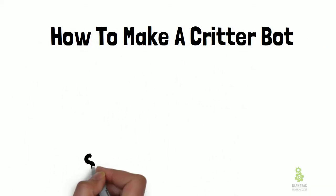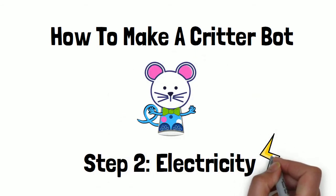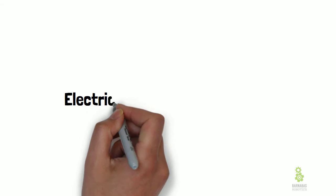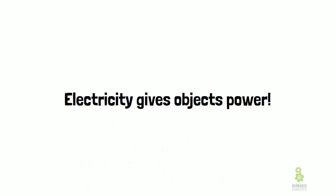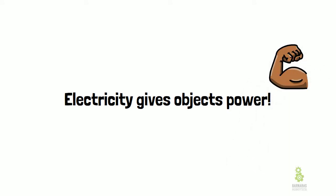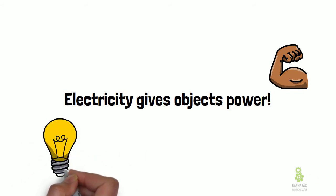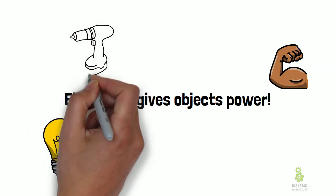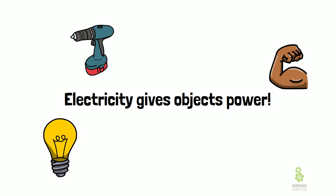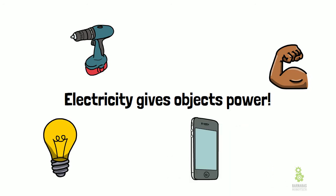Let's get started with step two of how to make a critter bot - this one is about electricity. It's going to help our robot turn on and come to life. What does electricity do for us? It gives objects power. I'm talking about power for electrical devices like light bulbs - without power they can't light up. Power tools like a drill without electricity can't help us drill things, and iPhones without electricity can't play games or make phone calls.